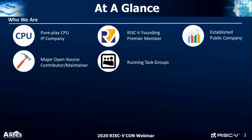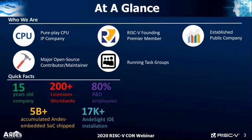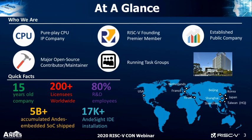At a glance, who we are: we're a pure-play CPU IP company. We're a founding, premier member of RISC-V International. We're an established public company in Taiwan, and we contribute to the open source and running task groups of RISC-V International. The company is 15 years old. We have more than 200 licenses worldwide. The majority of our employees are R&D engineers. We've shipped more than five billion chips, including one billion chips last year, and we have 17,000-plus software development tool installations. We are an international company with headquarters in Taiwan and offices all over the world.